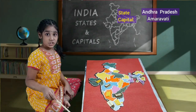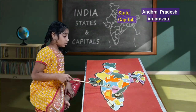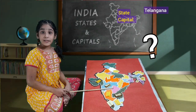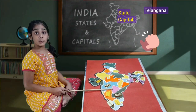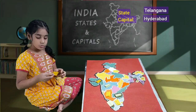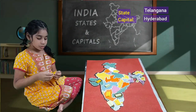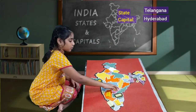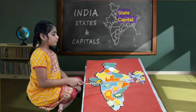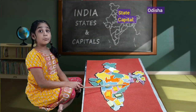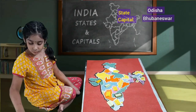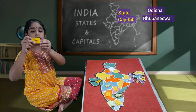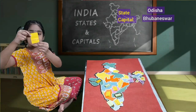Above Andhra Pradesh, we'll have Telangana. Telangana's capital is — can you guess what? Yes, you are right. It is Hyderabad. This is Telangana. If we open the chat, Hyderabad is there as capital. Next, we'll have Odisha. Odisha's capital is Bhubaneswar. This is Odisha. If we open the chat, we'll have Bhubaneswar as capital.